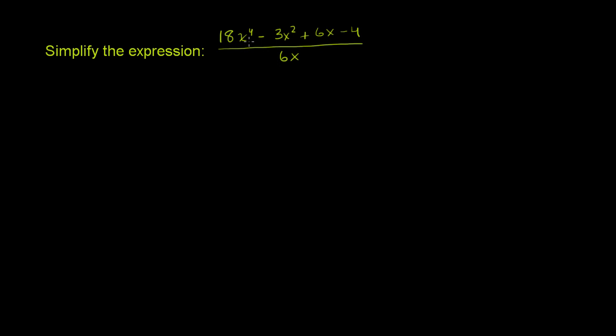Simplify the expression: 18x to the 4th minus 3x squared plus 6x minus 4, all of that over 6x.